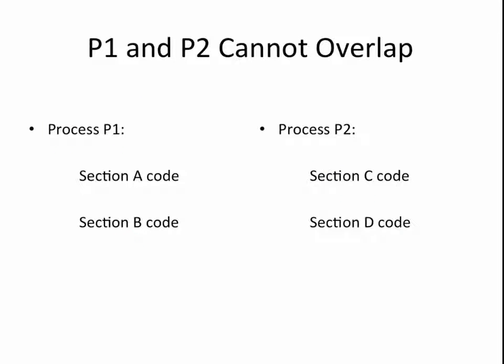Next, let's consider a slightly more complicated constraint where section D precedes section A or section B precedes section C. In other words, P1 and P2 cannot overlap. One has to run followed by the other, but either of them can be the one to run first. To achieve this, we want to use our S semaphore as a mutual exclusion semaphore.